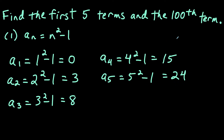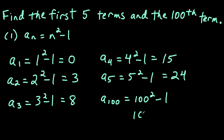The last thing we're going to do here is find the hundredth term. So a sub 100: if we plug in 100, we have 100 squared minus one, which is 10,000 minus one, which is 9,999.